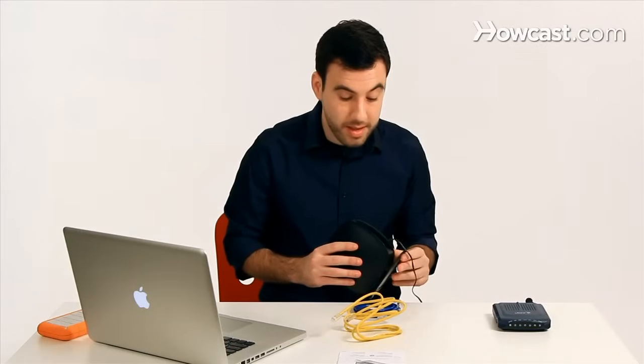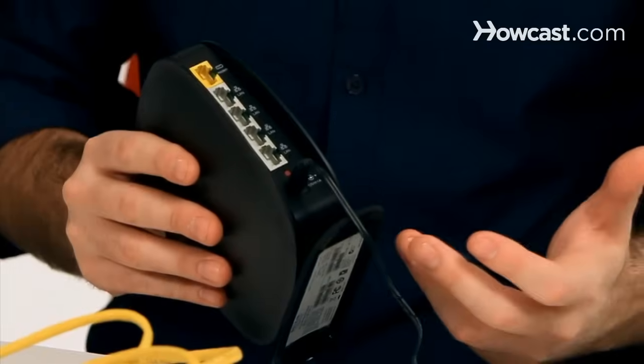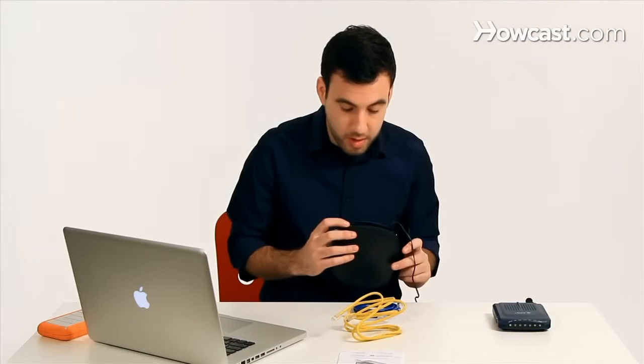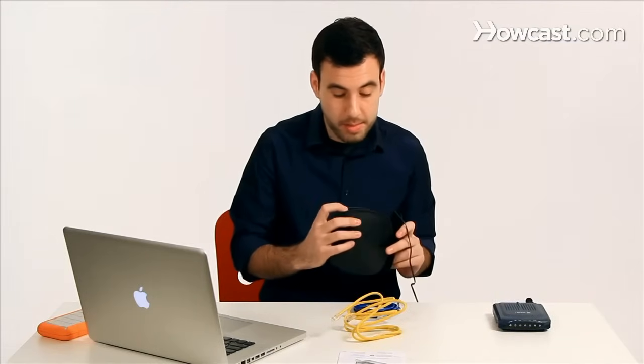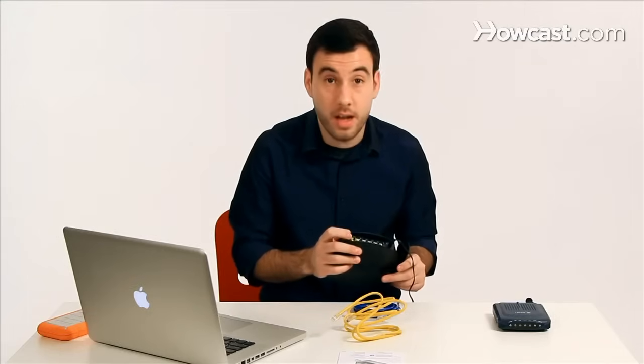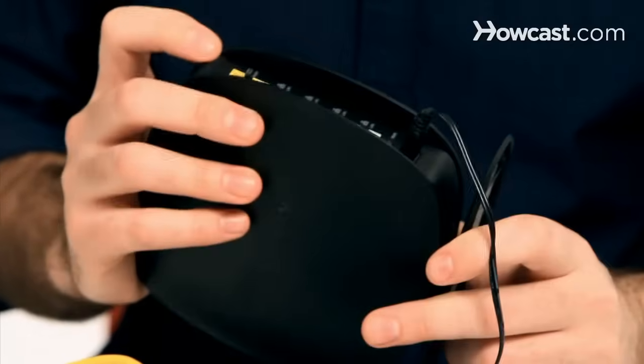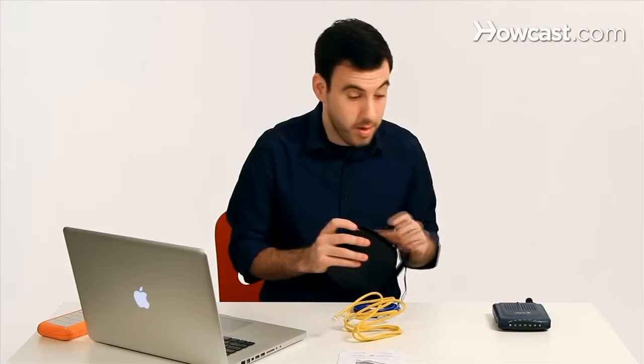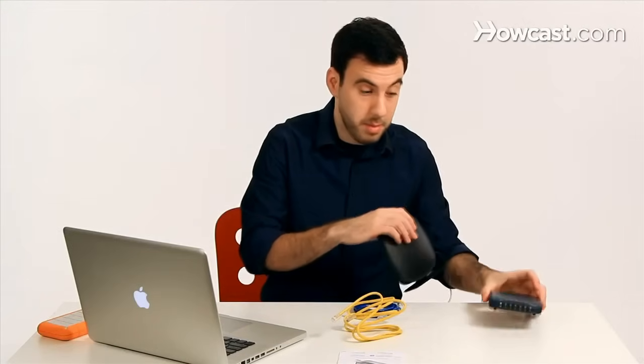You can also connect devices wirelessly, of course, because this is a wireless router, but we'll get to that later. Right now, the more important connection we're looking for is something called WAN, or sometimes it'll say uplink, or even internet on it. And what this port does is connect to the internet, basically. Your modem will go right here. So in this case, I have a little cable modem right here.